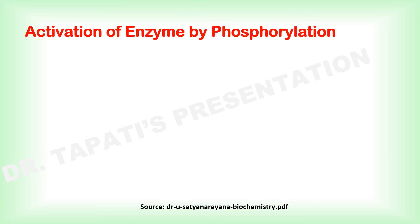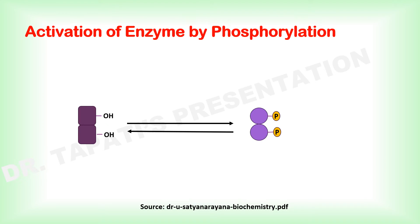Phosphorylation is the most common type of regulatory modification. It is estimated that one-third of all proteins in eukaryotic cells are phosphorylated, and one or many phosphorylation events are part of virtually every regulatory process. Some proteins have only one phosphorylated residue, others have several, and a few have dozens of sites for phosphorylation.